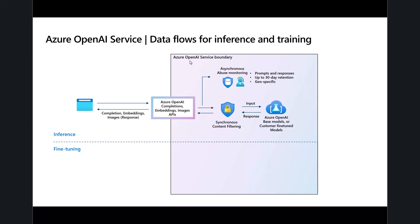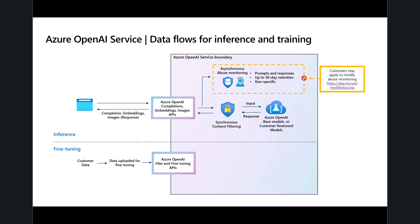There's one other thing happening in the background automatically — you don't have to enable it. By default on Azure OpenAI models, there is asynchronous abuse monitoring, which keeps a log of all prompts and responses for 30 days. This is geo-specific and maintained in line with the rules of the different geographic government authorities. A human in the loop can then detect any new issues we're not catching, so we can continue to improve. If you're using other model types, logging is a great idea. Customers not comfortable with this can apply to have it removed.